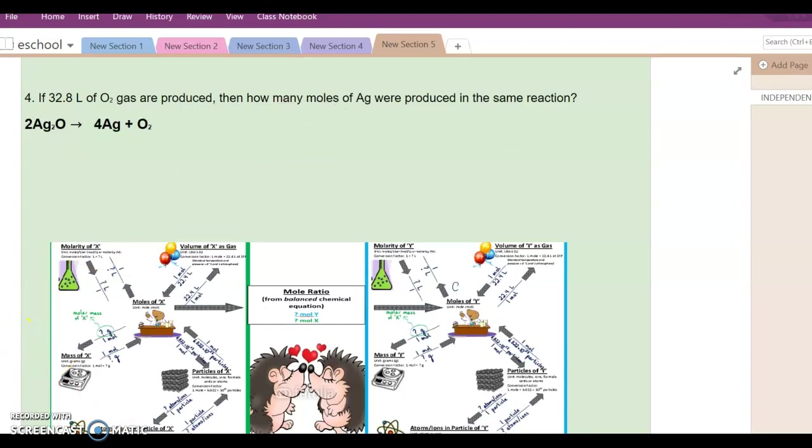Okay, so if 32.8 liters of O2 gas are produced, how many moles of Ag were produced in the same reaction? Well, let's get started. What's my given? I just always like to start by writing down my given and putting it over 1. It's a really simple thing I can do just to get started. Alright great, now what's it asking for? I'm going to use my mole map now.